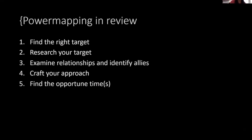To review power mapping in your own context: the first step is to find the right target. For example, the governor is a very important decision-maker, but didn't have that much influence on this rulemaking — so that wouldn't be the right target here. We knew we needed to influence the CARB board chair and other CARB board members. Second, research your target — figure out what they care about and what their record is. Third, examine relationships and identify allies — who has the power to influence this person, who do they listen to and care about? Fourth, decide on tactics for having these conversations with decision-makers.